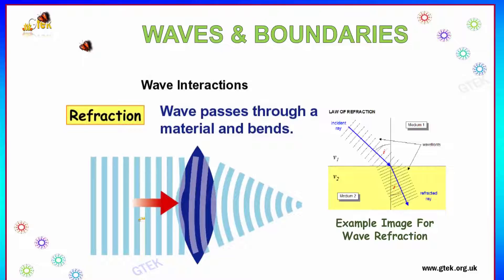Refraction is one such example for wave interaction. Wave passes through a material and it bends. You can see some example of wave refraction over here. When this gets to be interacted with the material, it gets to be bent over here. That is, refracted.